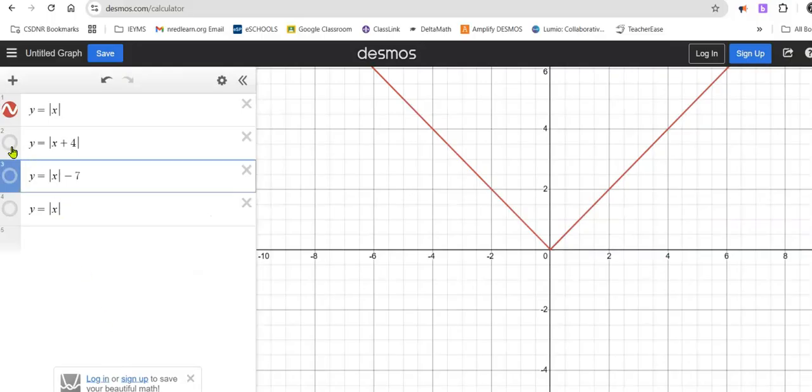Let's take a look at this on the graph. Here's our parent function, and now we have a plus 4 inside the grouping symbol, shifted left. And now we have a constant negative 7 outside the grouping symbol, down 7.